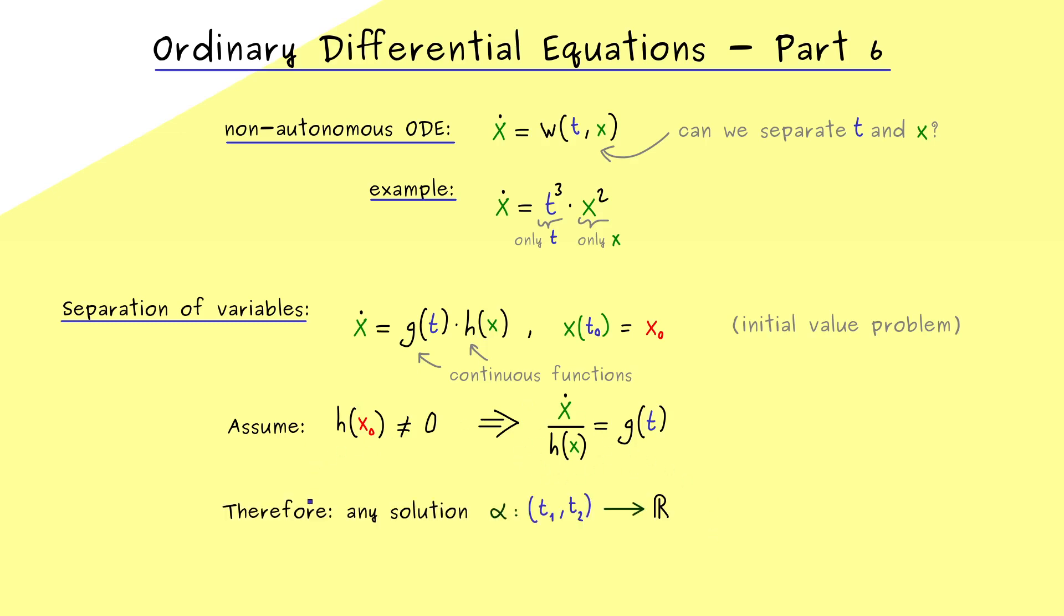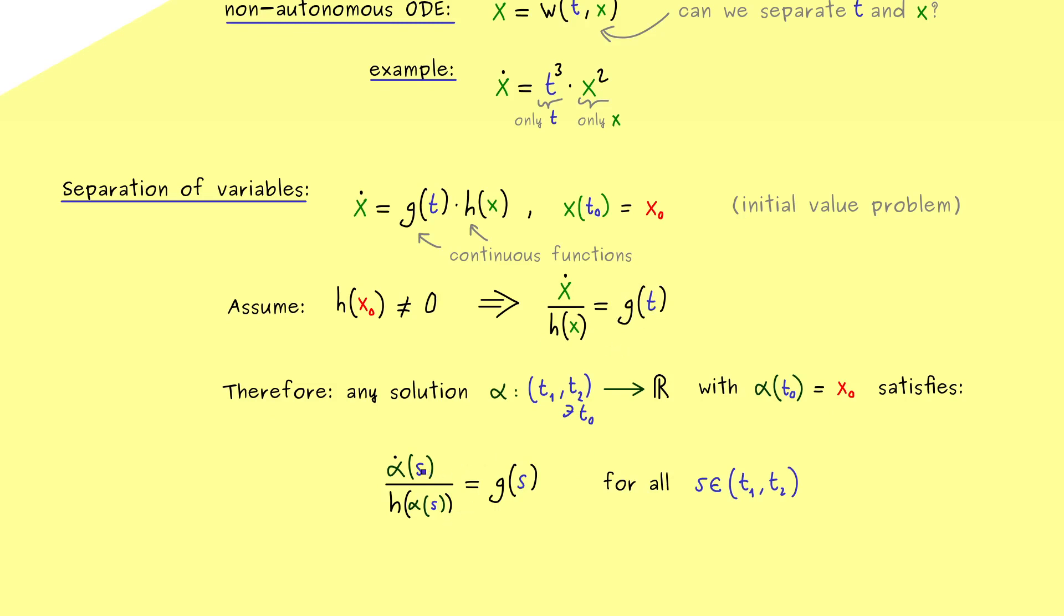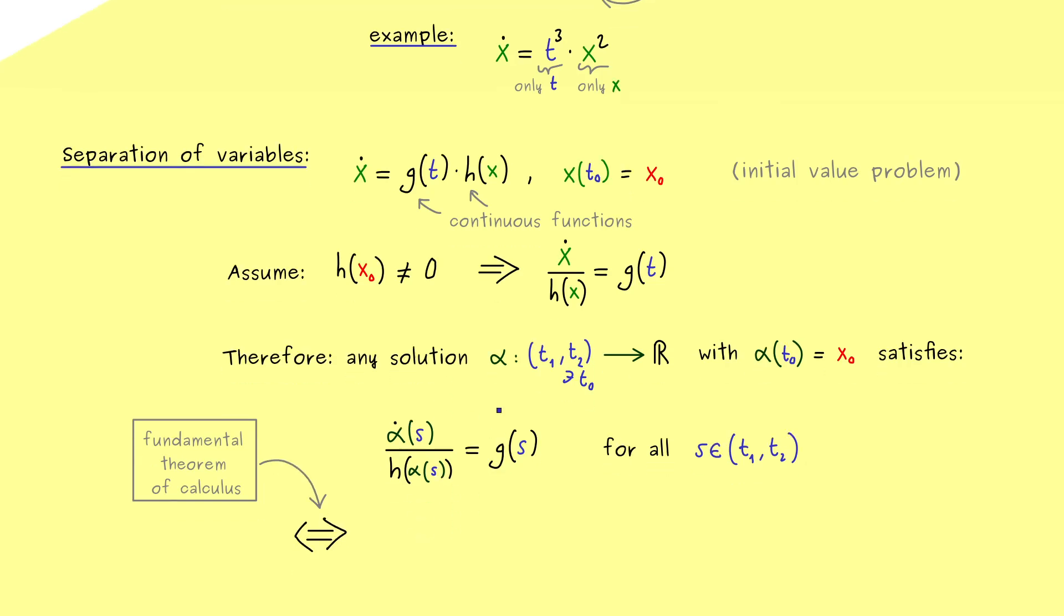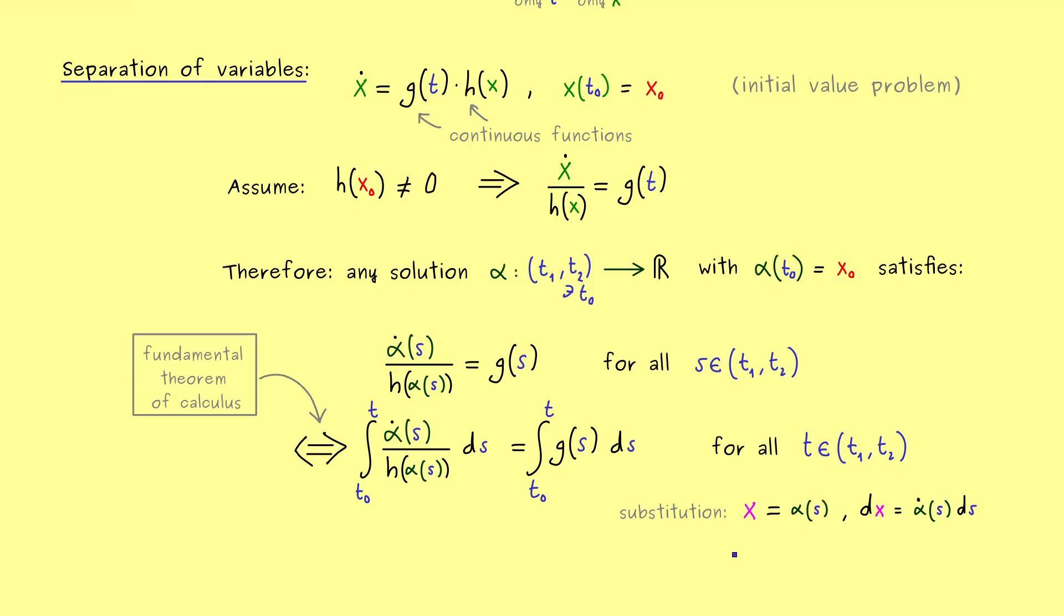The first thing we can do is to bring h to the other side. We know in a neighborhood of x0 we can divide by h. Let's see what happens if we have a solution of this ODE and let's call it alpha and t0 should lie in this domain of definition. Moreover alpha should solve the initial value condition so alpha at t0 should be equal to x0. We can just write alpha instead of x in the ODE. However instead of t I now want to write s simply because we want to do an integration again.